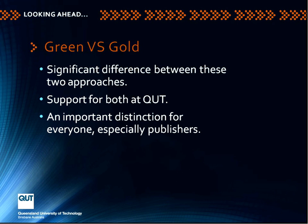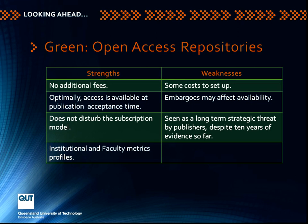In that global swing, we see a debate between what are called green and gold approaches. An easy way to think about this: the green road to open access is something instigated by the author or author's institution, and the gold is something instigated by the way a publisher places material into the open. At QUT we have had support for both, but our main emphasis has been on our institutional repository, which is the green road. We think they've both got strengths and weaknesses.